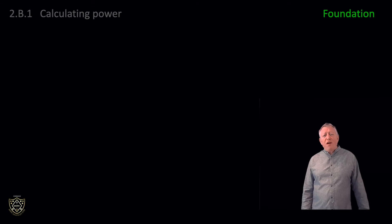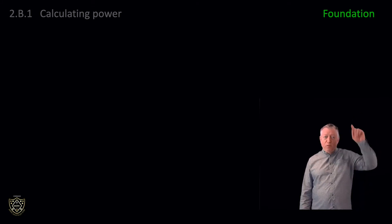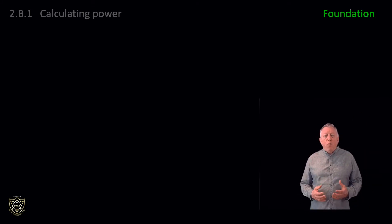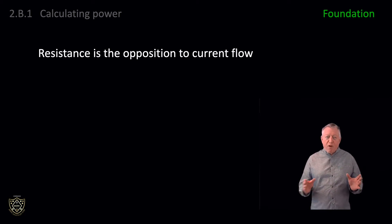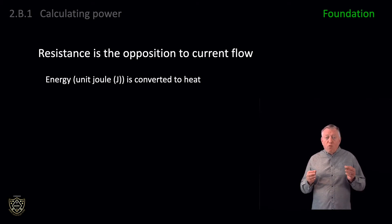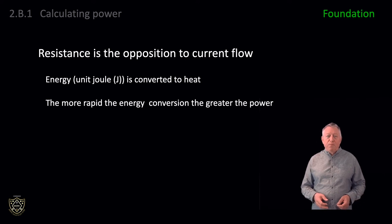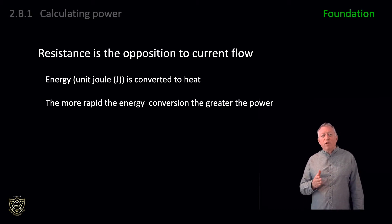Starting at foundation license level, from syllabus item 2A1 we learned that resistance is the opposition to current flow. As electrons pass through the resistor, some of their energy in joules is converted to heat. The more rapid the energy conversion, the greater the power. In a practical sense, if the rate of energy conversion is higher than heat dissipation from the resistor, the resistor will get ever hotter.